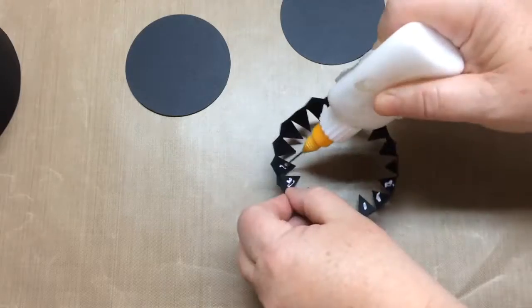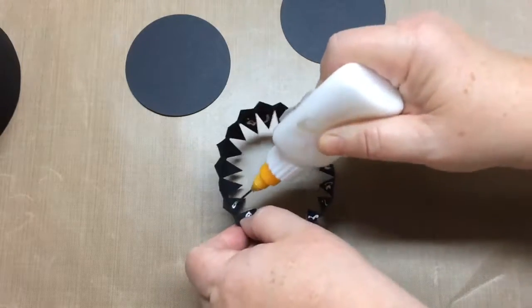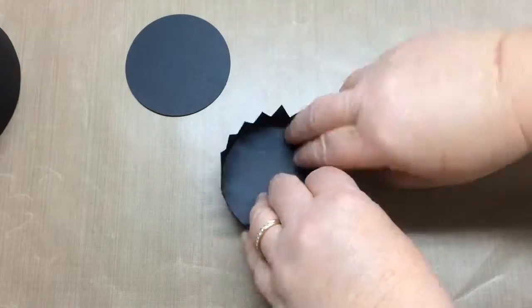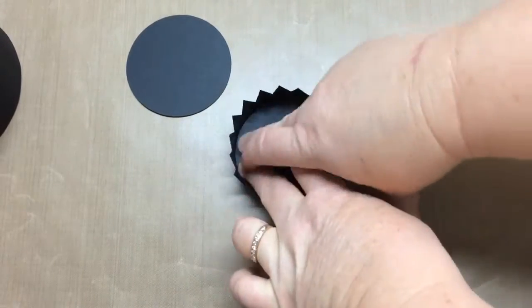On this one I added glue all at once rather than partially and then added the panel and applied pressure to secure the tabs.